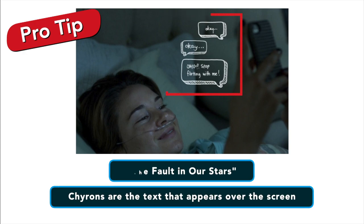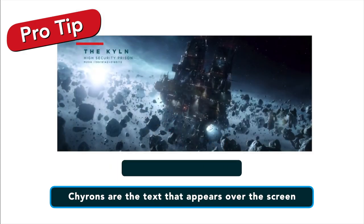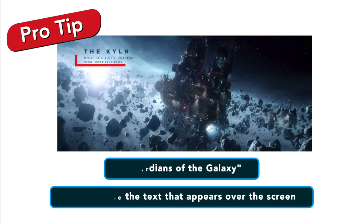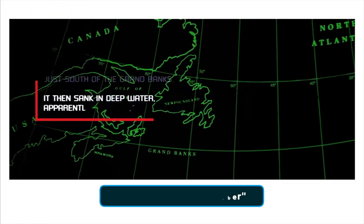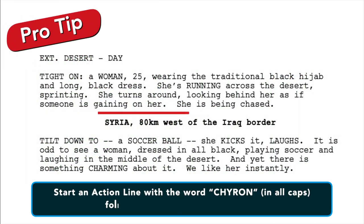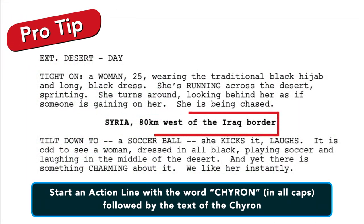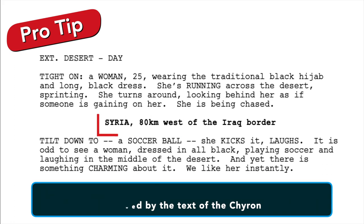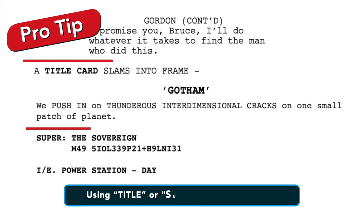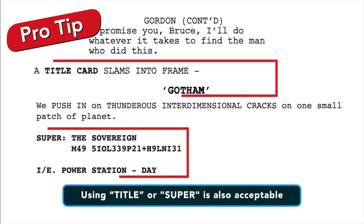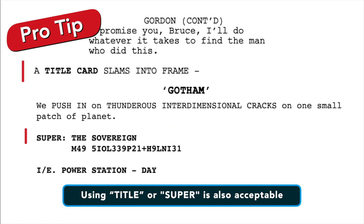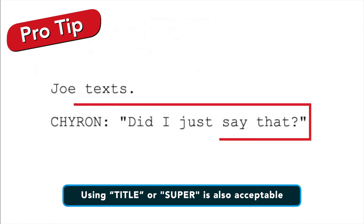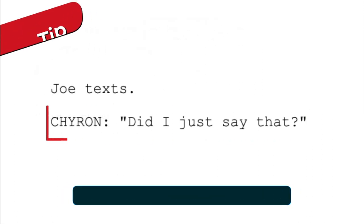Number eleven are chyrons. Chyrons are text that appears over the screen, usually used to indicate the time and place of a scene to the audience — you'll see this a lot in military or spy movies. Start an action line with the word CHYRON in all caps, followed by the text of the chyron. Some writers like to use the word TITLE instead of chyron — it's a personal choice. Using chyron would look exactly the same; you just swap out the word.